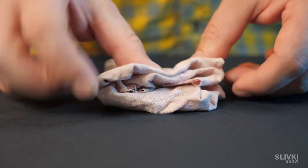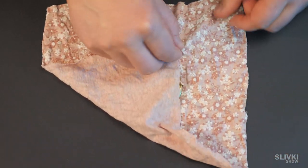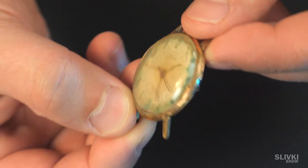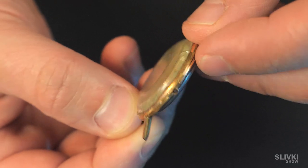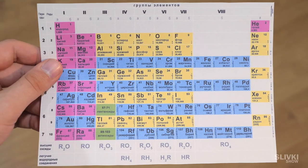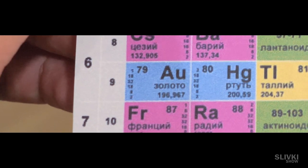Grandma left old watches as a legacy that aren't functioning now and can't be repaired. We almost wanted to throw them away, but while looking closely, we saw an AU stamp on the housing. Getting Mendeleev's table, we understood these watches are gold-plated.